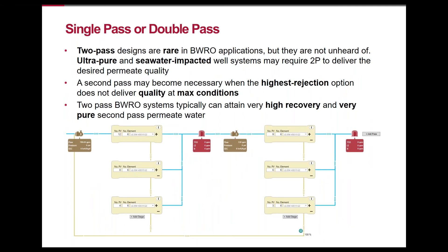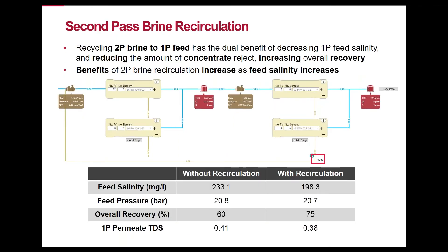Systems requiring very low TDS permeate may require two passes. In brackish water applications, two-pass systems are most commonly used to treat water from seawater-impacted wells or in ultra-pure applications. Two-pass brackish systems can typically produce very high purity water with excellent recovery due to the lower system salinity as compared to seawater RO. One of the most intuitive modifications to add is second-pass brine recirculation. Because the reject from the second pass has lower salinity than the first-pass feed, it dilutes the first-pass feed, reducing feed pressure and increasing system recovery. This method effectively brings the recovery of the second pass to 100%. As feed TDS increases, the benefits of second-pass brine recirculation increase, but even in low TDS systems, the water savings are desirable.